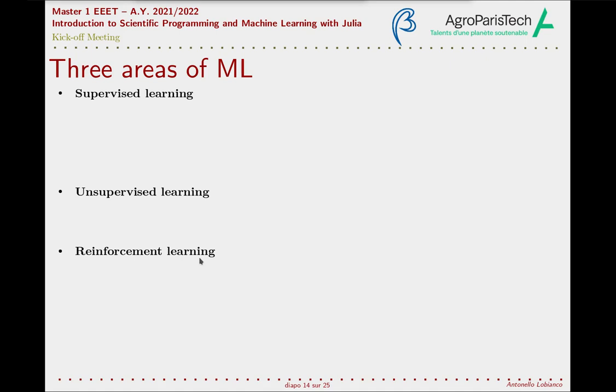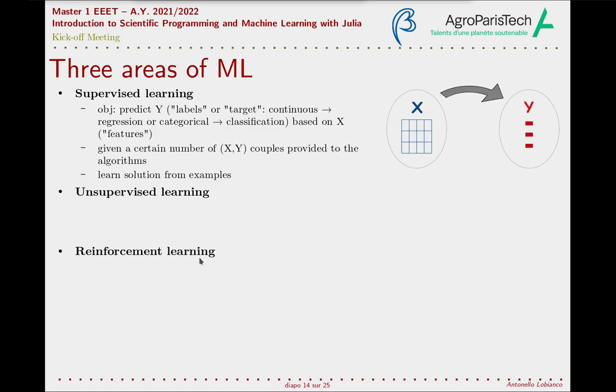We will start with supervised learning, luckily the most common machine learning task and that are everywhere nowadays. In a supervised learning problem, the objective is to predict some new information. This can be to predict the occurrence of some events in the future.